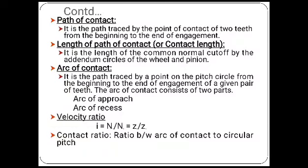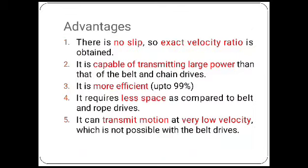The length of path of contact is the length of the common normal cut off by the addendum circle of the wheel and pinion. The arc of contact is the path traced by a point on the pitch circle from the beginning to the end of engagement of a given pair of teeth. The velocity ratio formula is given here.